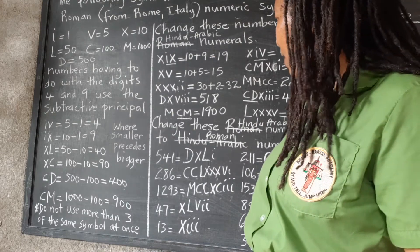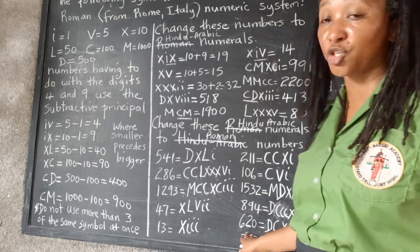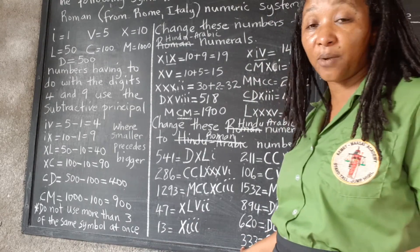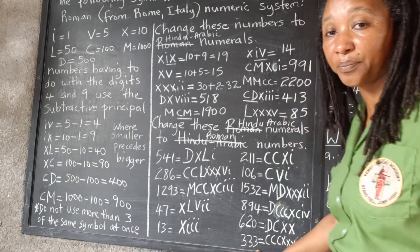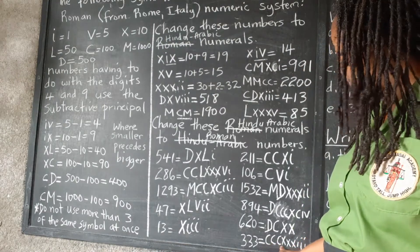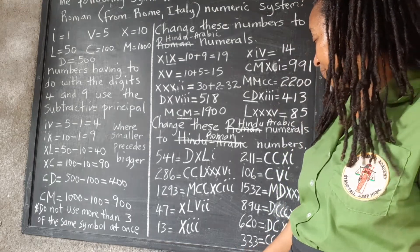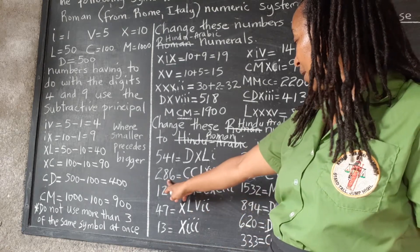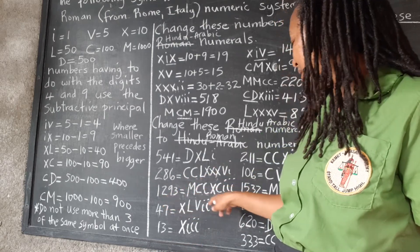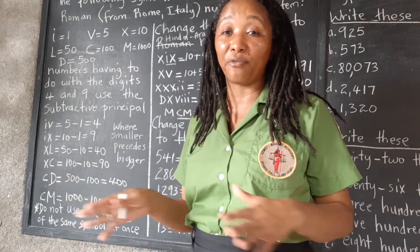Which would you prefer? Notice that in most cases the Hindu-Arabic way is the shorter way — it takes up less space. Look at 333: in our system we use 3 digits, 3 symbols. In the Roman numeral system we use 9 different symbols to represent the same number. The Roman numeral system was a very long way of writing numbers. The Hindu-Arabic system uses fewer digits to represent the same quantities.